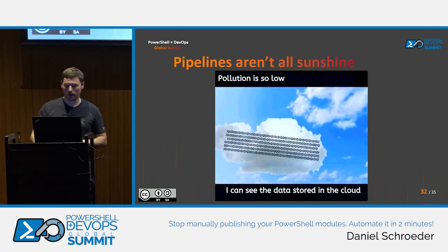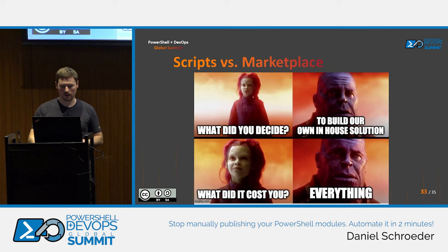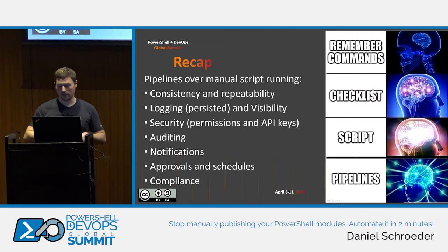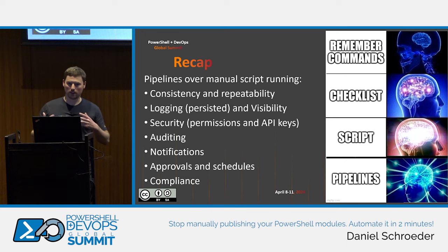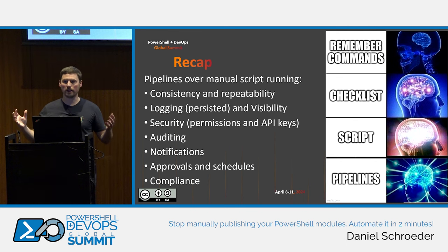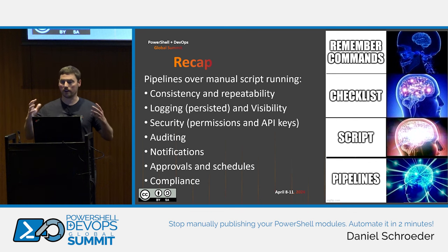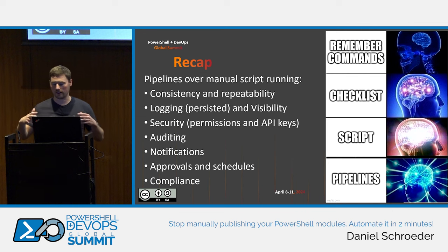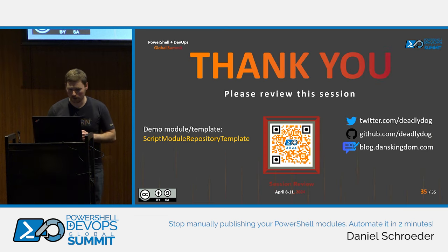We're running low on time, so just to wrap up: automating your modules is an evolution. The worst thing you can do is type things by hand and try to remember steps. At the very least, make a checklist. Ideally, have a script. Even better, use those scripts with pipelines. Scripts and pipelines are not mutually exclusive — using pipelines also enforces best practices like source control and enables approvals, enhanced security, and auditing. Thank you very much.